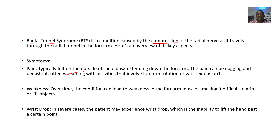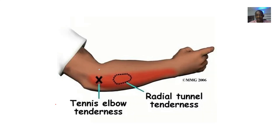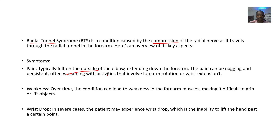Symptoms: typically there will be pain on the outside of the elbow — you can see this area labeled in red here. The pain will often worsen with activity. Over time, the condition can also lead to weakness in the forearm, making it difficult to grip or lift objects.